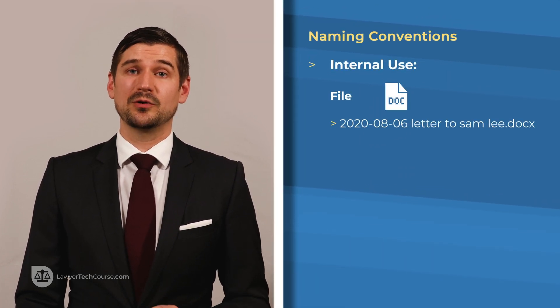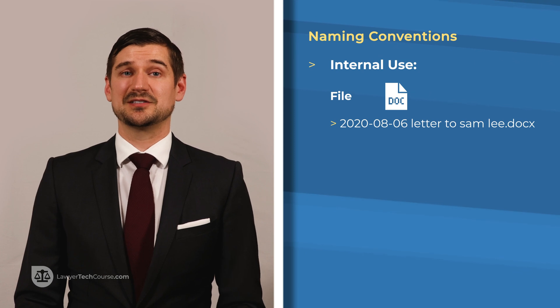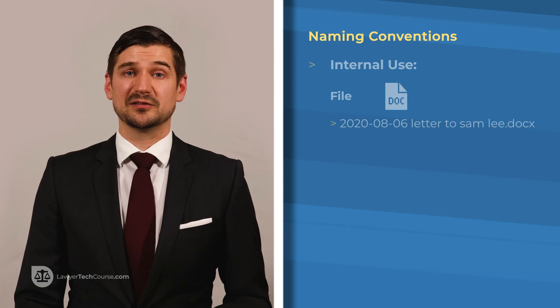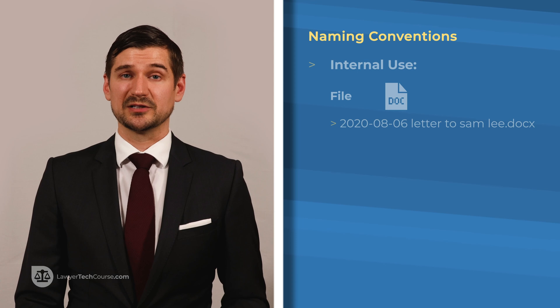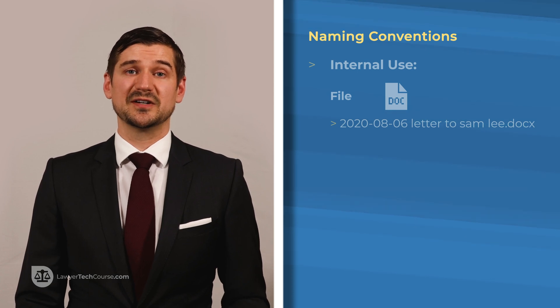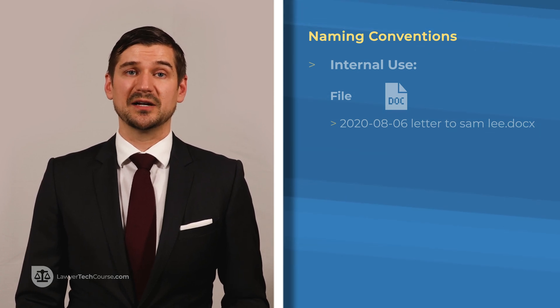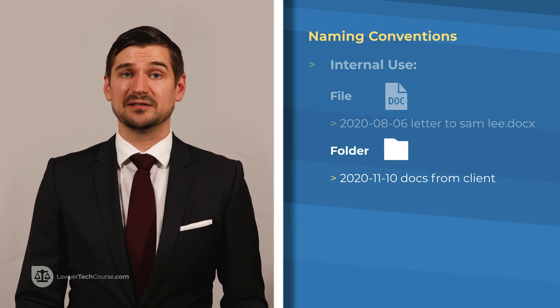For example, if I draft a letter to a person named Sam Lee on August 6, 2020, I name the file 2020-08-06 letter to Sam Lee. Because this is simply a letter that I'm drafting, it's clearly for internal use only. Similarly, if I receive documents from a client by mail on November 10, 2020, I use the internal naming convention to create a folder with a name like 2020-11-10 docs from client and save the scanned files into that folder.